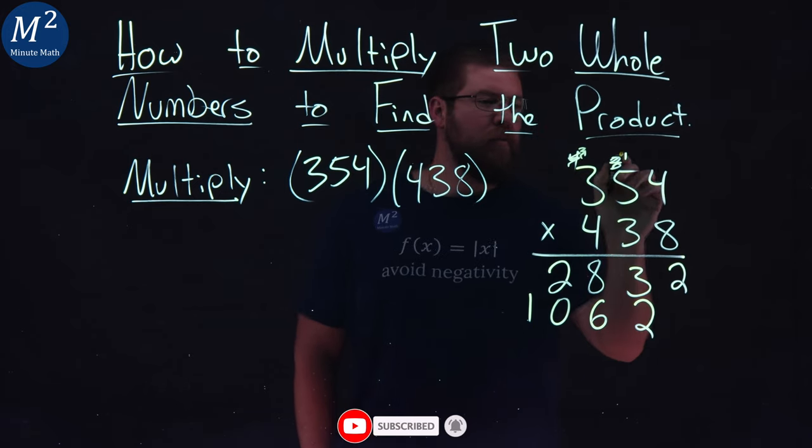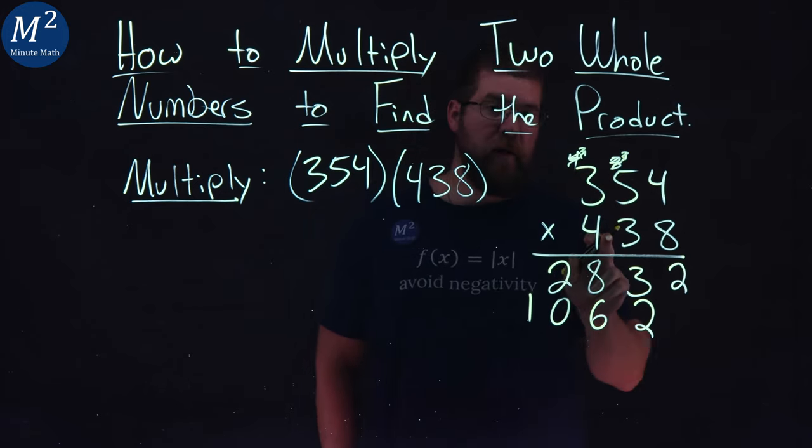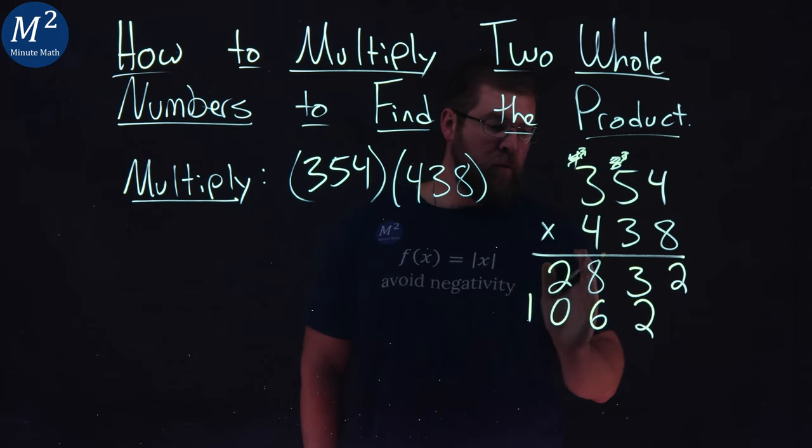Now, scratch off the 1s. We're going to deal with the last one here, the hundreds place. So again, we're moving over one more. We don't have to write the 0s, we keep it lined up.